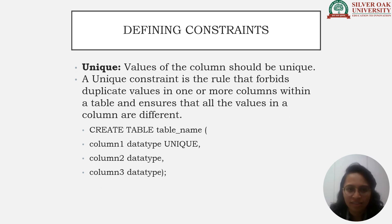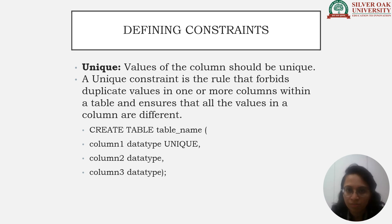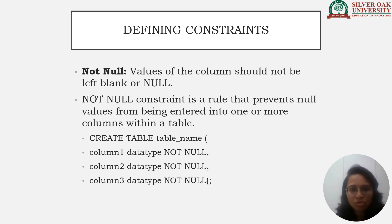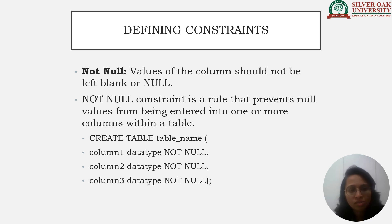The Unique Constraint requires that the values of a column be unique. It forbids duplicate values in one or more columns within a table, ensuring all values in the column are different. Syntax: CREATE TABLE table_name (column1 datatype UNIQUE, column2 datatype, column3 datatype). The Not Null Constraint means values of a column should not be left blank or null. Syntax: CREATE TABLE table_name (column1 datatype NOT NULL, column2 datatype NOT NULL, column3 datatype NOT NULL).